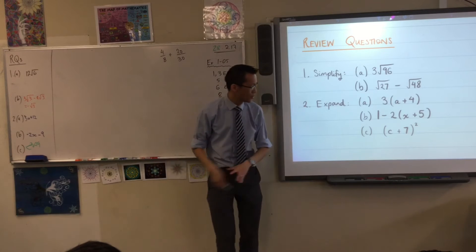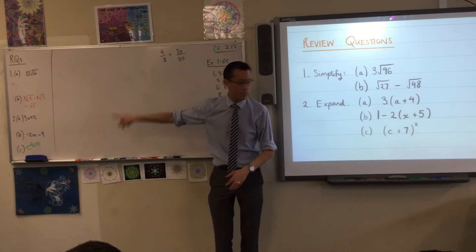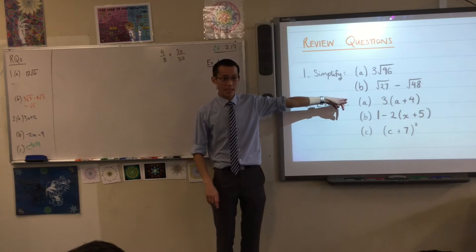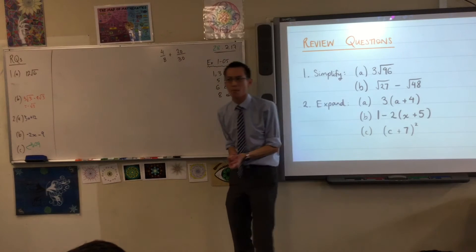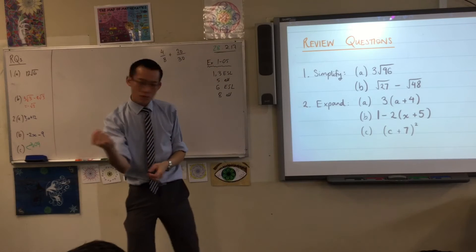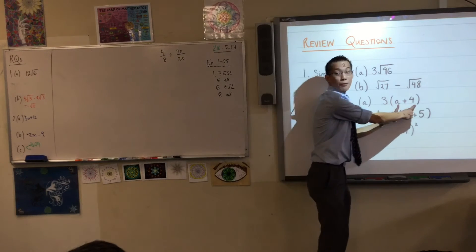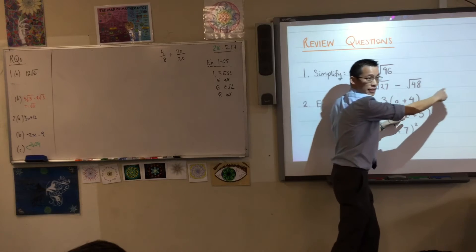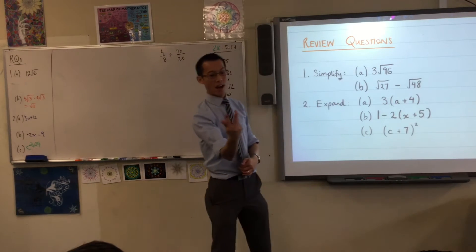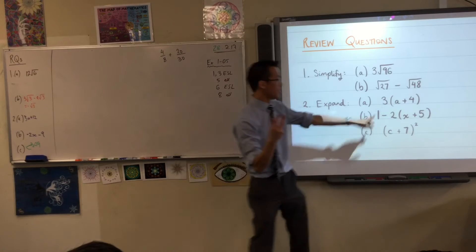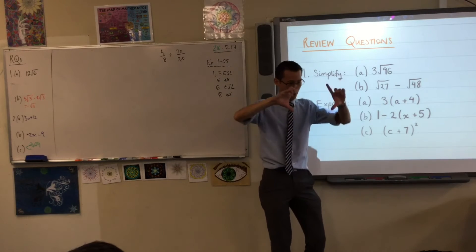Right, let's have a look at question 2. 3a plus 12. What do you think? Yes? Now, why is, I see why there's a 3a, but why is it 12? Where does that come from? Yeah, that 3 is being applied to everything inside the brackets. If I had more things in here, like a plus 4, plus x, plus pi, plus whatever you like, everything gets multiplied by 3. That's what the brackets are all about.